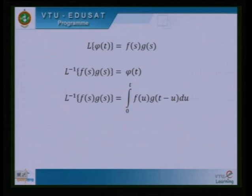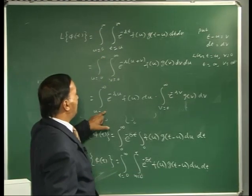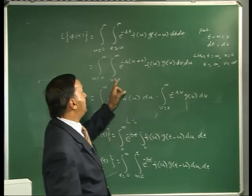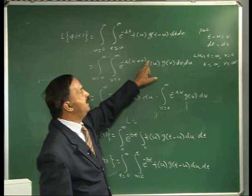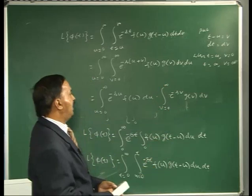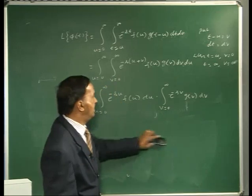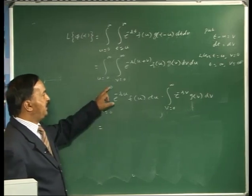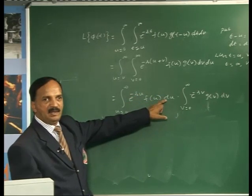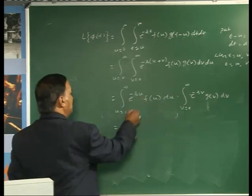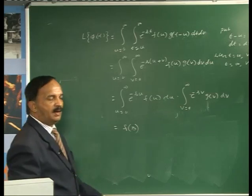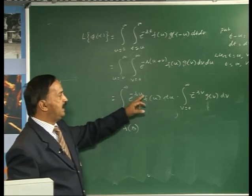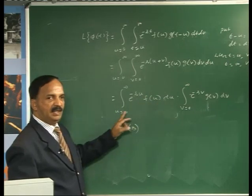By separating the variables: u varies from 0 to infinity, e to the power of minus su into f(u) du, multiplied by v varies from 0 to infinity, e to the power of minus sv into g(v) dv. By definition, the integral from 0 to infinity of e to the power of minus st into f(t) dt equals L of f(t) equals F(s).